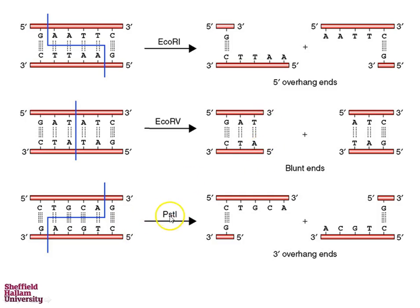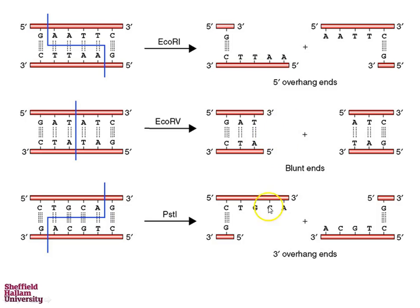We also have enzymes such as PST1, which recognises the restriction site C-T-G-C-A-G and cleaves to leave a 3' overhang. So, restriction enzymes cut DNA leaving either a 5' overhang, a blunt end, or a 3' overhang.